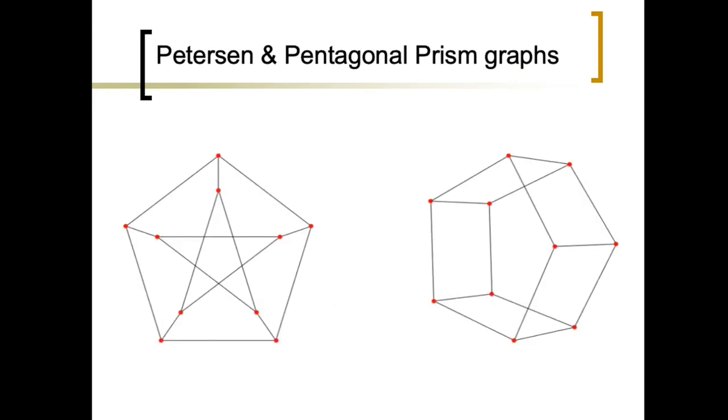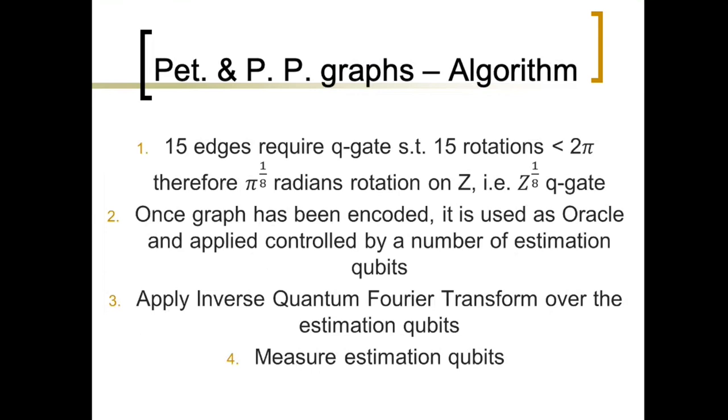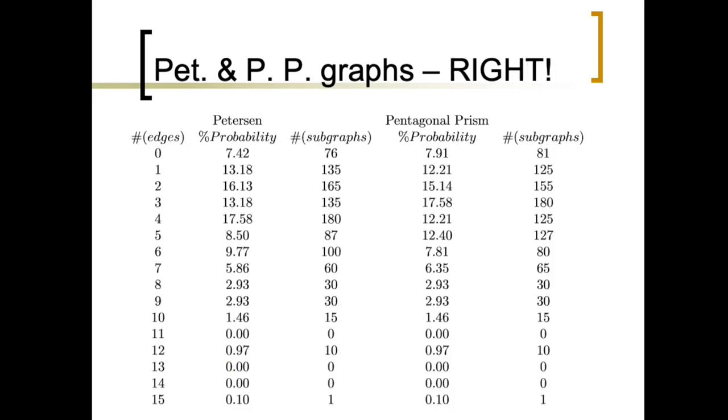These two graphs are not isomorphic. So, when we apply our invariant over these two graphs, this is the result we get. If we just look over the results concerning subgraphs having from 15 to 8 edges, they both meet. But with less edges than 8, they are different. So, our invariant, of course, it is an invariant and also distinguishes these two. Which are, let's say, quite famous two graphs.